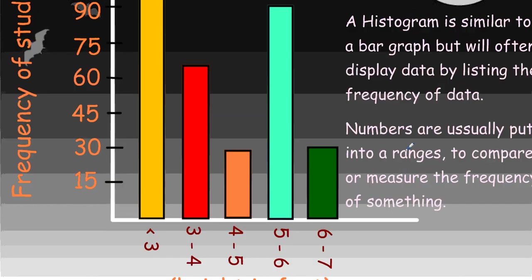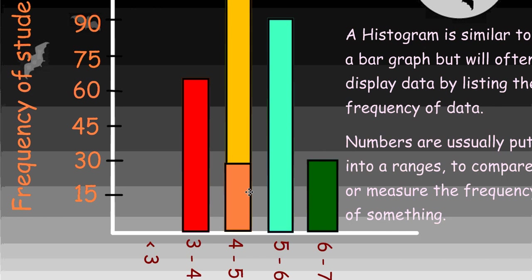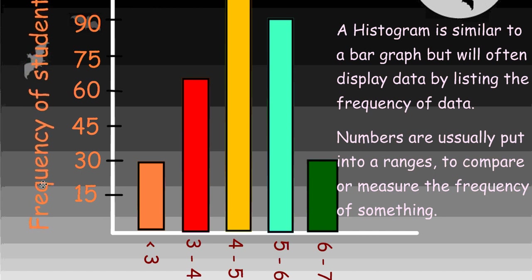Less than three feet tall, three to four feet, four to five, five to six, six to seven. So I've got a statistical question for you: does this look accurate for sixth graders in their heights out of 225 students? No, it would not be very accurate, because we have a lot of them that are under three feet tall, and this isn't very accurate for a sixth grader. It would probably be between four and five feet. A histogram is similar to a bar graph but will often display data by listing the frequencies of data, with numbers usually put into ranges to compare or measure the frequency of something.